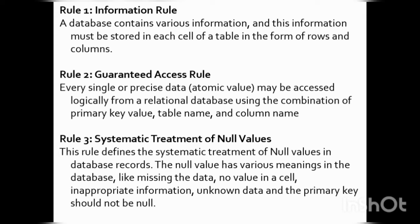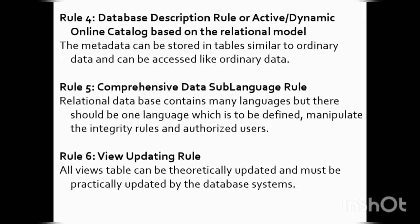The fourth rule is the Database Description Rule, also called the Active Dynamic Online Catalog based on the Relational Model Rule. The metadata can be stored in tables similar to ordinary data. Metadata is data about data — for example, column names and data types are stored in tabular format. This metadata is stored in normal system tables and can be accessed using ordinary data access methods.